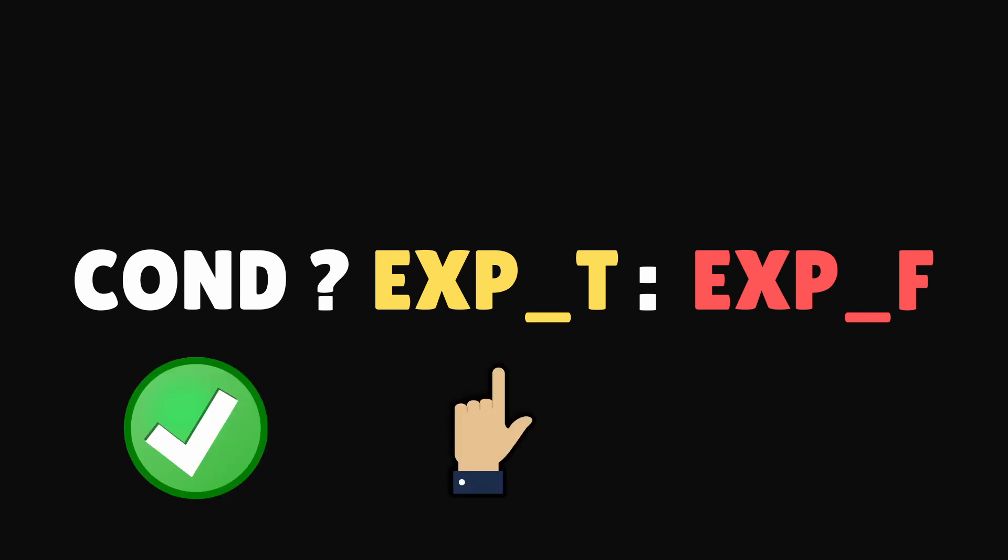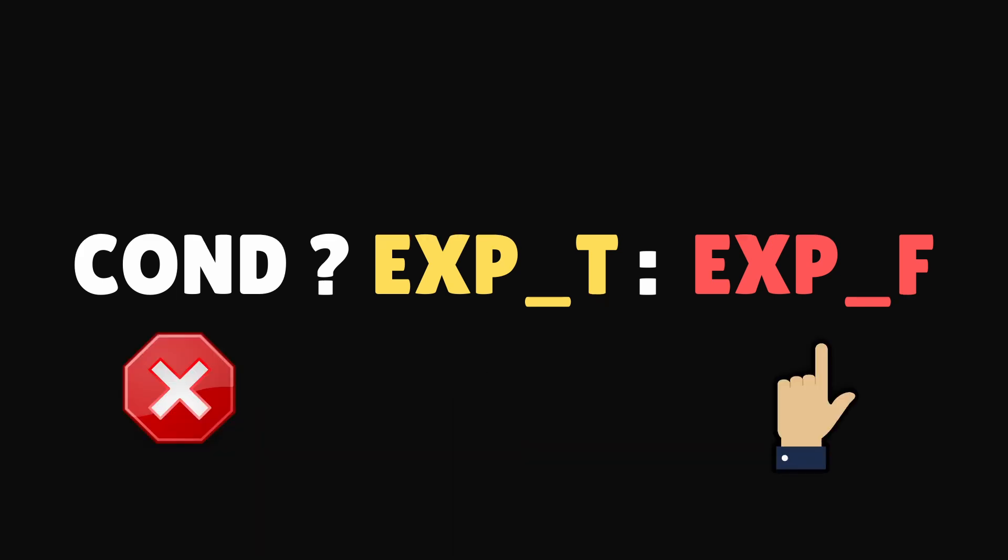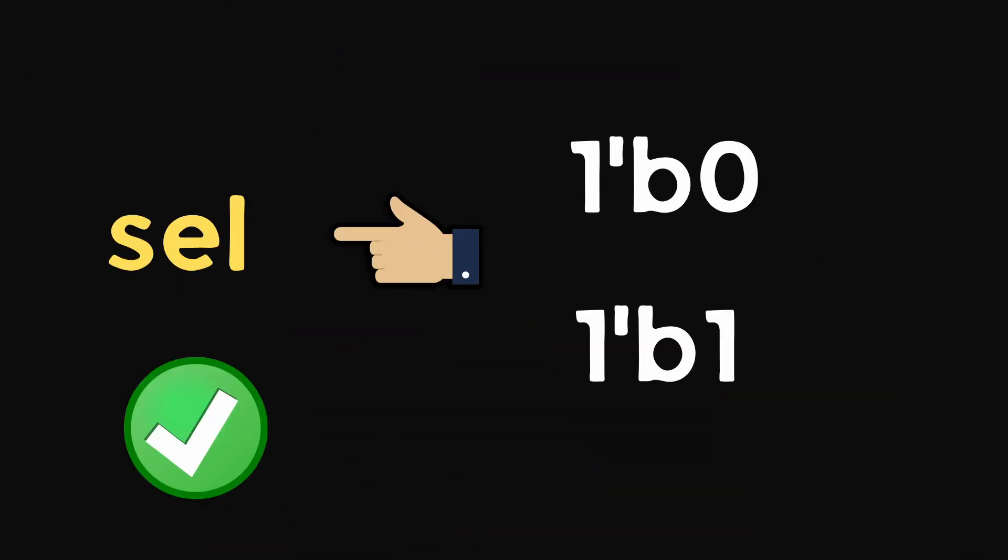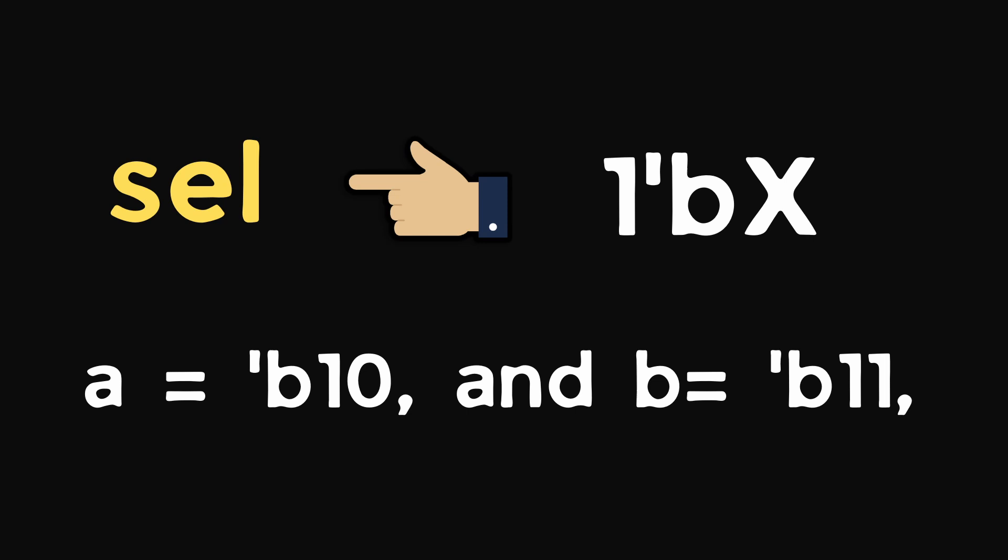Here, expression T is executed if condition is true and expression F is executed if condition is false. But there is a difference between conditional operator and if-else. They behave similarly when the condition is real logic value. But when the condition is uncertain, that is X, then there's a difference.